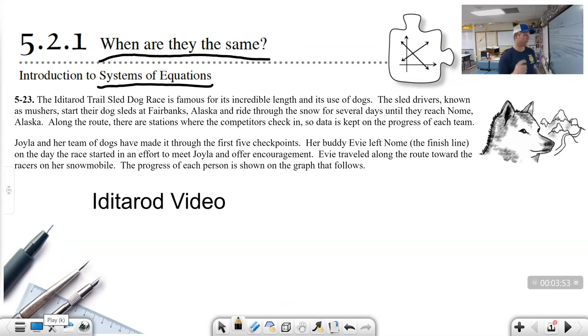Now, there are a couple things that you should have picked out. You heard that it starts at Fairbanks until they reach the finish line in Nome. Did you catch that it was over 1,000 miles? From Fairbanks to Nome is over 1,000 miles. Let's finish reading the rest of this problem. Joila and her team of dogs have made it through the first five checkpoints. Her buddy Evie left Nome, which is the finish line, on the day they started the race. So Joila and Evie started at the same time.